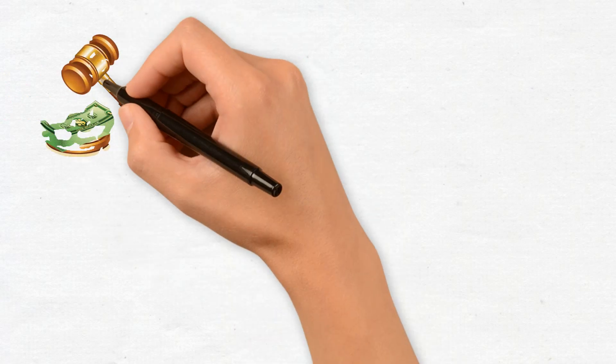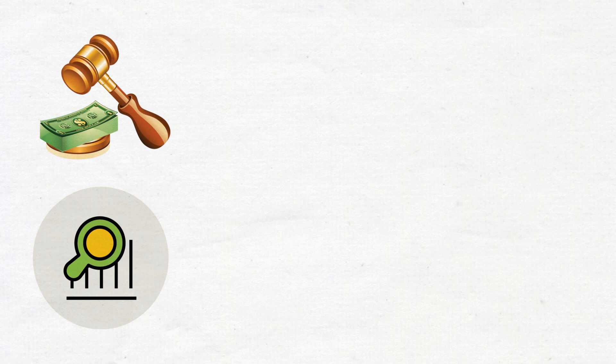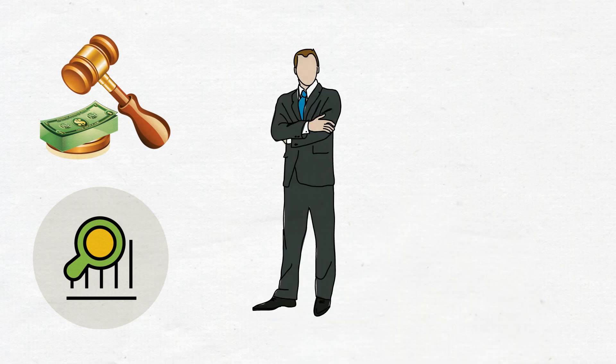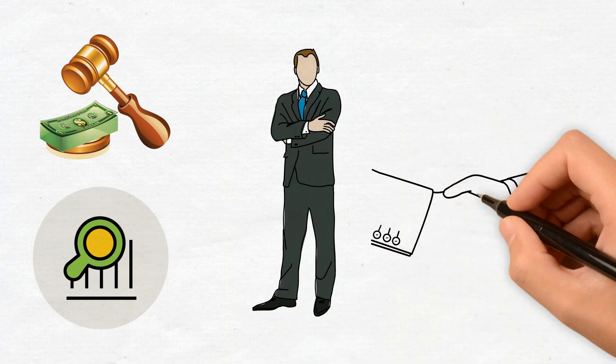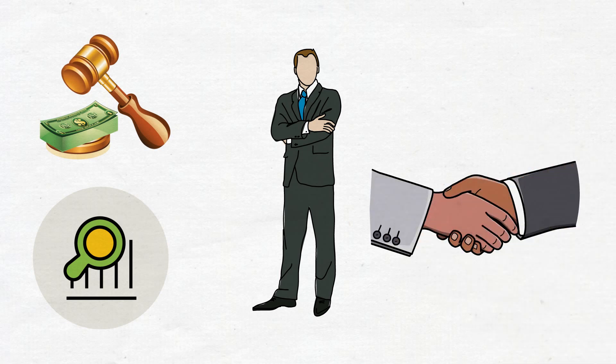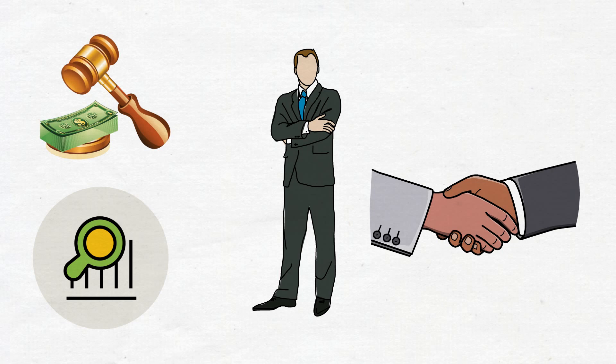Once you've identified your ideal property, the next crucial step in the home buying process is making an offer and navigating negotiations. Crafting a compelling offer involves not only determining the right price but also understanding the local market conditions and the seller's motivations. Your real estate agent will play a pivotal role in helping you create an offer that stands out. Negotiation skills become essential as you work with the seller to reach mutually agreeable terms. It's important to strike a balance between getting a fair deal and not overextending your budget.